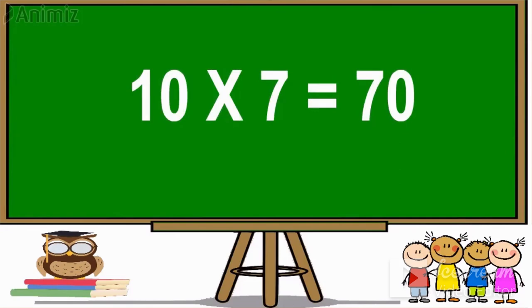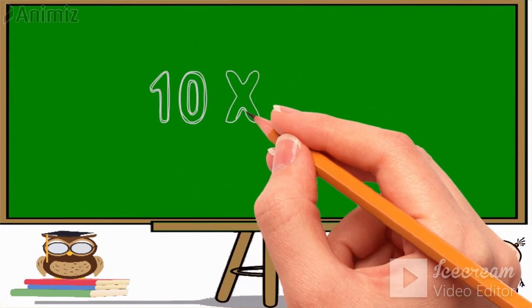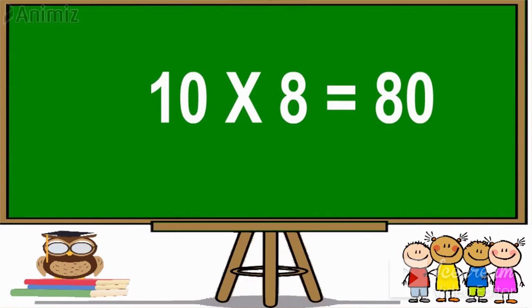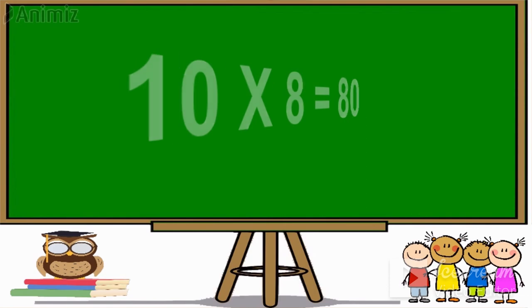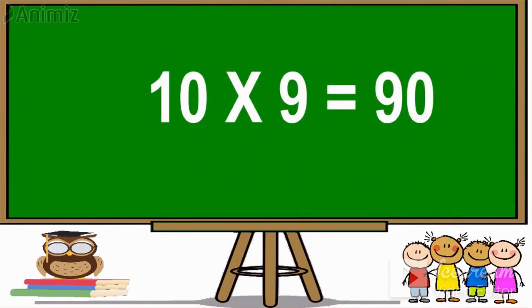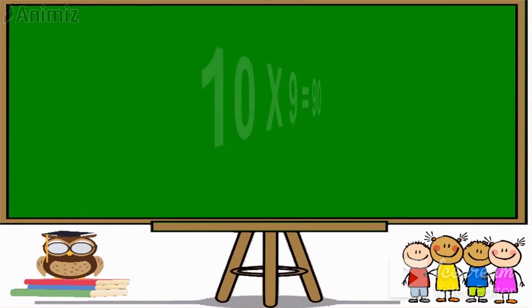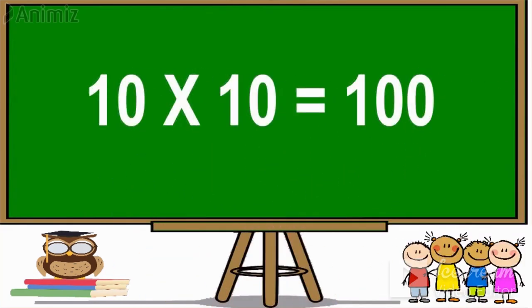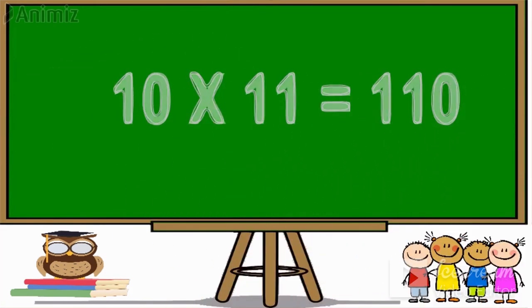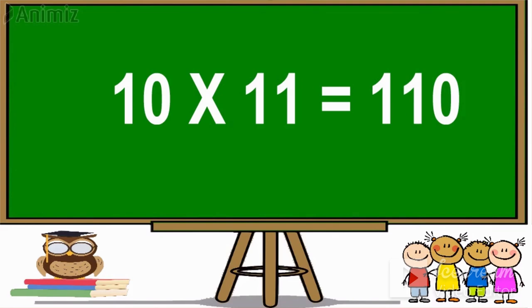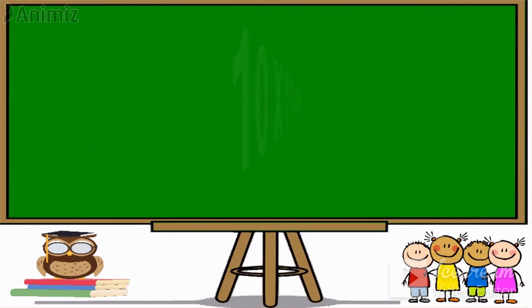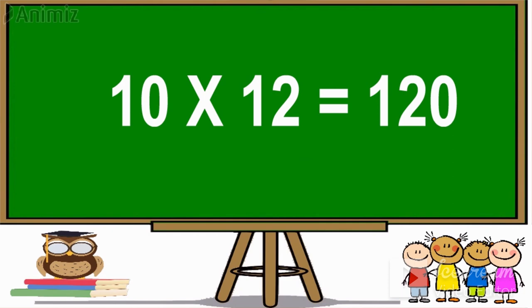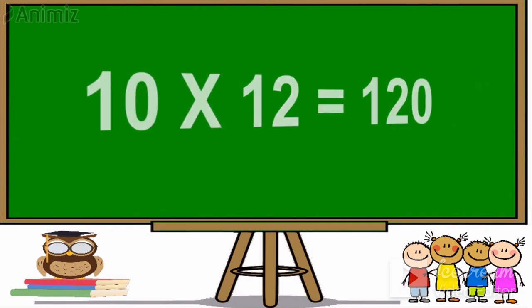10 sevens are 70. 10 eights are 80. 10 nines are 90. 10 tens are 100. 10 elevens are 110. 10 twelves are 120. Now repeat again.